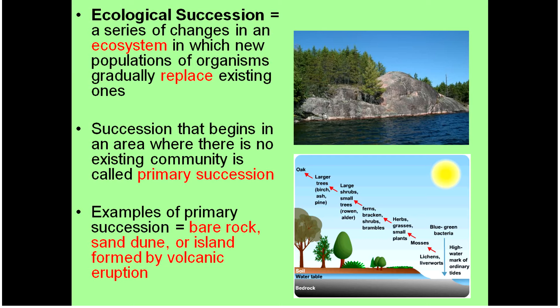We have two types of succession: primary and secondary succession. Primary succession is going to start in an area where we don't have any existing community, so there's no living things in that area to start. For example, a bare rock, like the one shown up above, might be where we start primary succession. Also, a sand dune where there's no living things, or an island that's been created by a volcanic eruption.